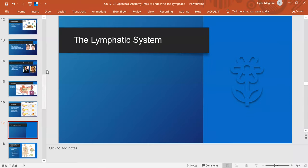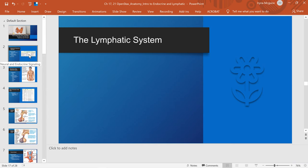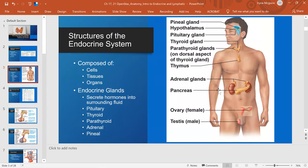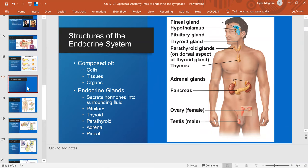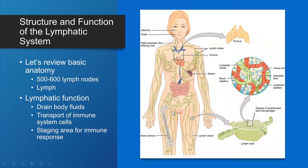That was a very quick introduction to the endocrine system. Next is the lymphatic system. The lymphatic system is composed of lymphatic organs, lymphatic vessels, and major lymphatic organs are the lymph nodes — we have about 500 to 600 lymph nodes. We have a whole network of lymphatic vessels, and inside those vessels we have fluid called lymph. Lymphatic function is to drain body fluids, transport immune system cells like white blood cells, and serve as a staging area for immune response. The lymphatic system is a network for your immune system.